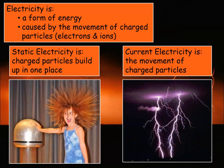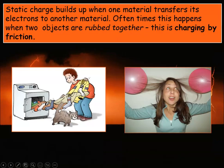Current electricity is a little bit different — it is actually the movement of these charged particles. They're not just building up in one place, but they're moving from one place to another. We most commonly see current electricity in the devices we use every day, everything from our cell phones to our stoves to our computers, but it's also in lightning. Lightning builds up static charges, and when lightning strikes, that's where a current is formed.